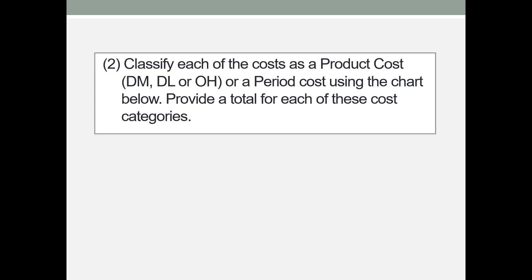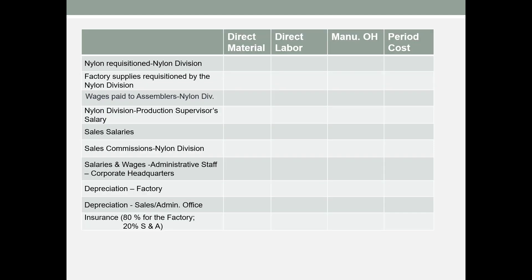Now let's look at the other way we classify costs: product versus period costs. We're going to classify each cost as direct material, direct labor, manufacturing overhead, or a period cost. We are supposed to include a total, so I'm going to put the amount incurred in each of the columns.